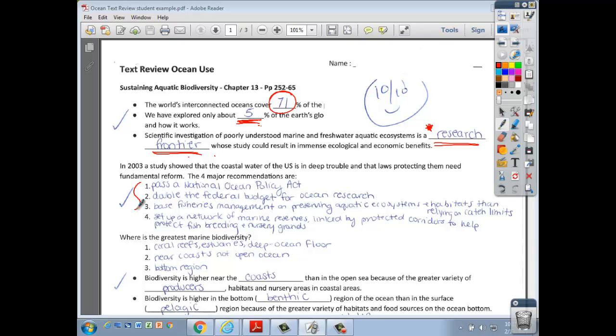Going down here in 2003, a study showed that the coastal waters are in trouble. So what can we do? We need laws. Pass a National Ocean Policy Act that would regulate ocean use, pollution, just like the Clean Air Act and the Clean Water Act. We need a national policy act for the oceans, and in doing so, we can double the federal budget for ocean research. It doesn't look like that's going to happen anytime soon. However, even on a state level, money needs to be there for ocean research.